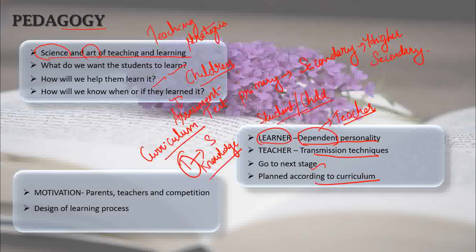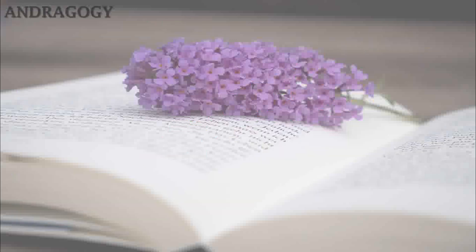In child learning, the motivation factor is important. Teachers are the main support for students in school, and competition can also trigger motivation. The design of the learning process is also important in the teaching-learning environment — whether it is activity-based, theoretical, or practical. This is about Pedagogy.